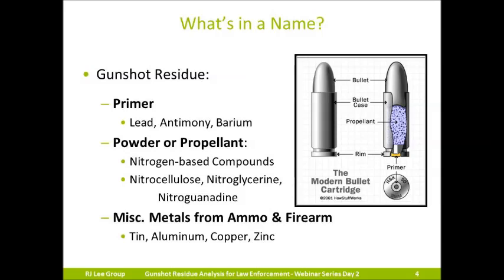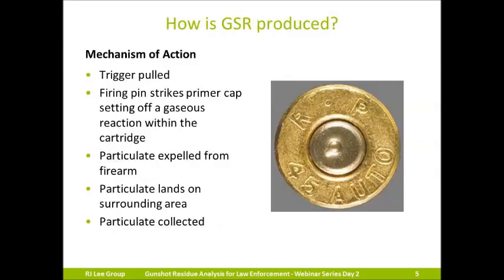These powder components are important when analyzing evidence for distance determination. While RJ Lee Group can perform distance determination, it will not be covered in this webinar. The bullet is next to the powder and is what is forced out of the firearm during discharge. In addition to elements from the primer and powder, we also see other metals from the ammunition and the firearm itself. Aluminum or tin can come from a thin layer of foil used to separate the primer and the powder. When the trigger on a firearm is pulled, the firing pin will strike the back of the primer cap, causing the primer residue to burn, which in turn ignites the gunpowder.